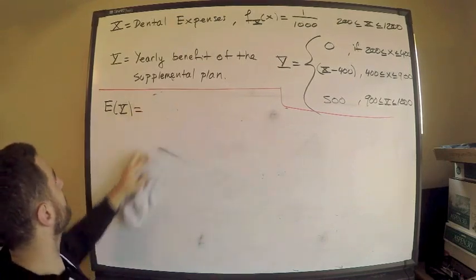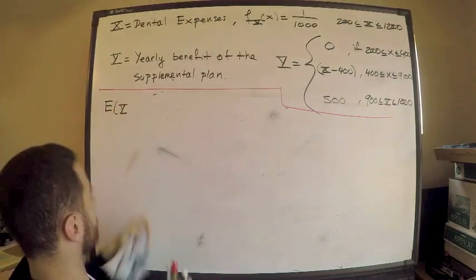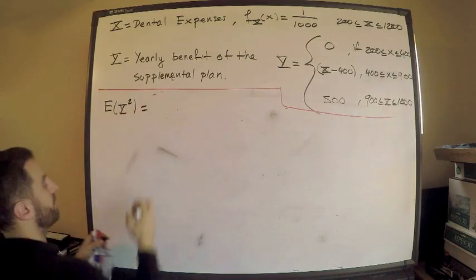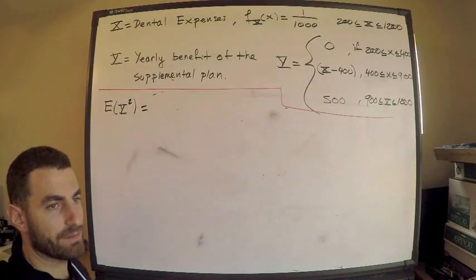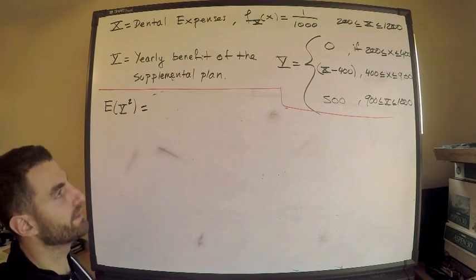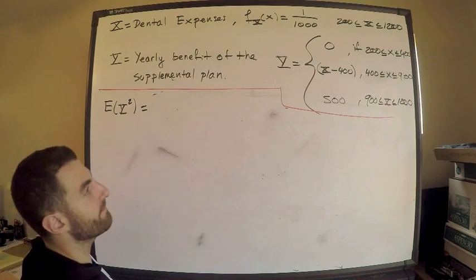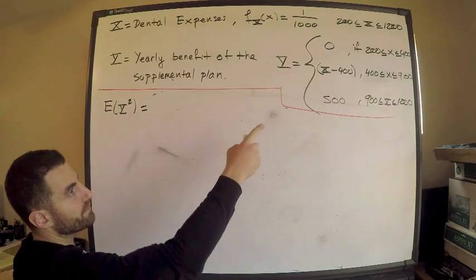I'm just going to change this to a square. So now this is equal to, again, I'm not even going to set up the integral. I'm just going to basically write what I have. You need to be that familiar with this. You need to be that efficient with this.